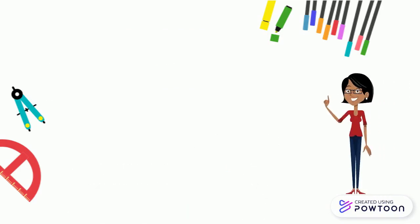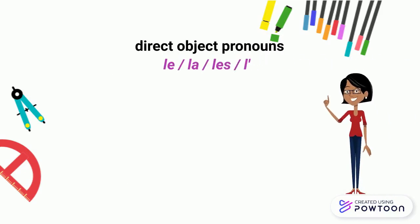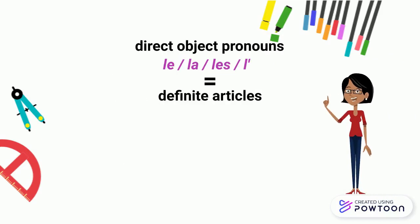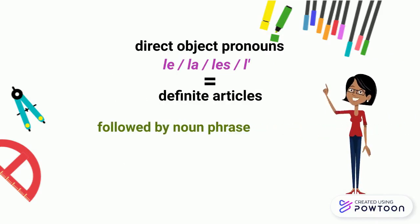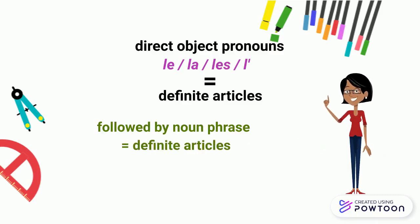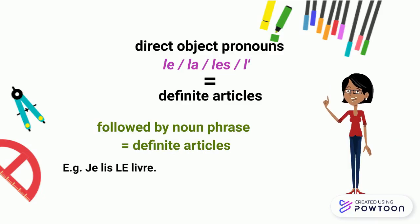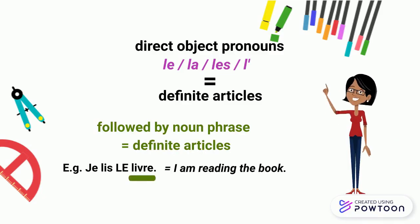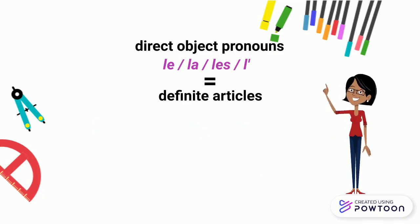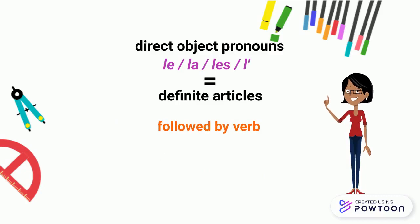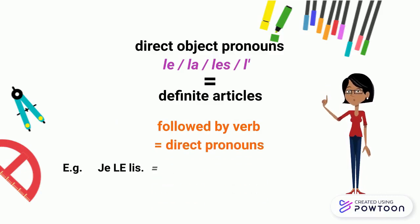Note that the direct object pronouns le, la, les and l' are identical to the definite articles. When they are followed by a noun or an adjective and a noun, they are definite articles — for example, je lis le livre, I am reading the book — livre is a noun. But when they are followed by a verb, they are direct pronouns — for instance, je le lis, I am reading it — lis is a verb.